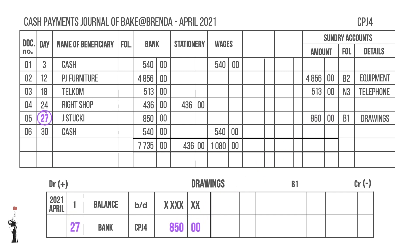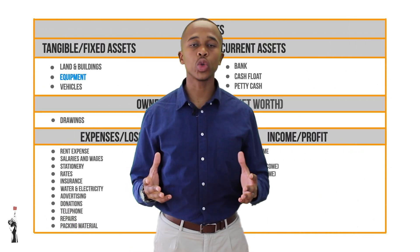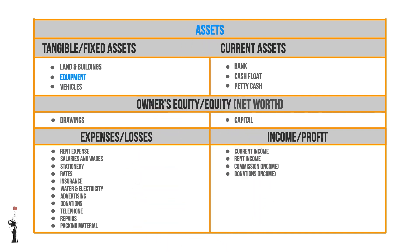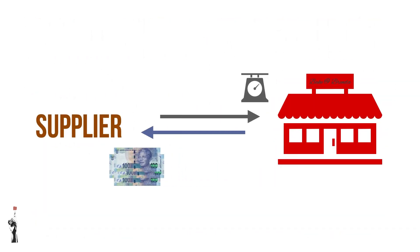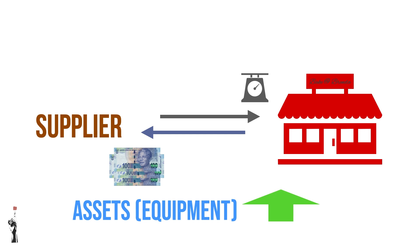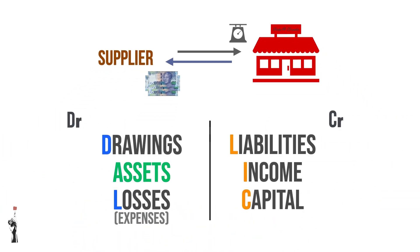The next account we'll be looking at is equipment, which is an asset. Equipment was bought, which means the asset — equipment — will increase. It's important to remember this table off by heart. Using the acronym DALEK, assets increase on the debit side.